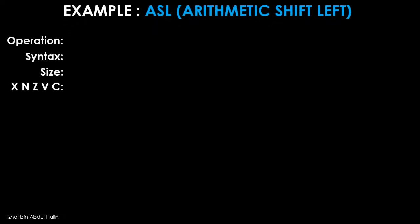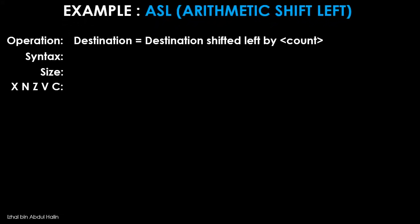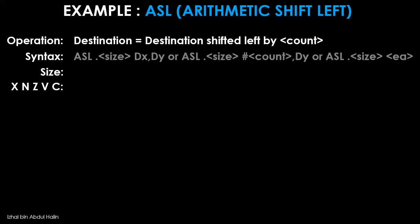Let's take a look at the ASL instruction, used to arithmetic shift left data in a destination operand. The final result resides in the destination operand. The number of times that the data is shifted can be specified by the programmer in a variable count in the instruction. Data is shifted one bit at a time until the number of shifts equals the specified count. The general syntax shows that three variants are also available. The operand size is byte, word, and long word. All of the status registers are affected after execution of the ASL instruction.